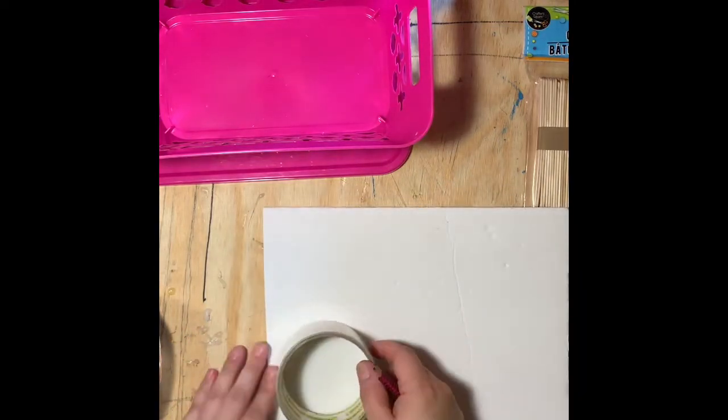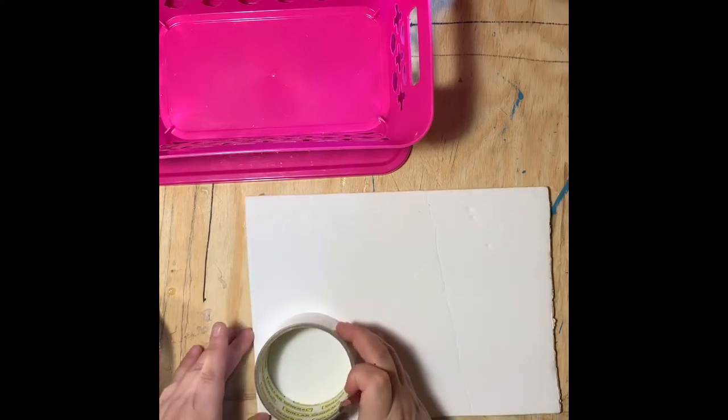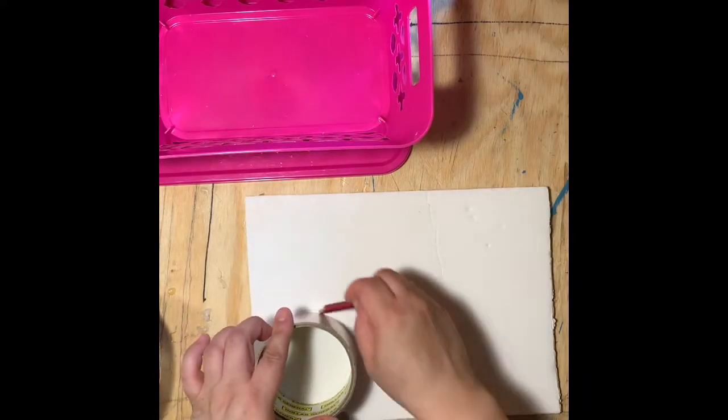I'm going to use a roll of tape as a stencil to cut out my circles. I'm going to cut out four circles, stacking two circles and gluing for each burner.